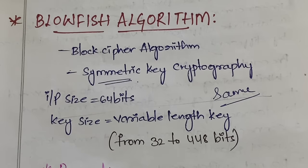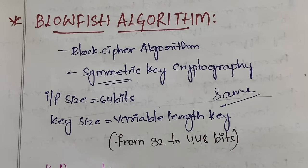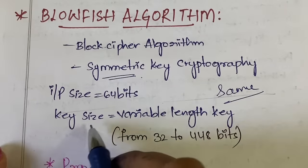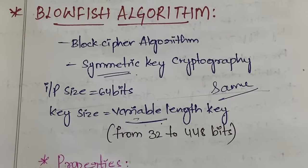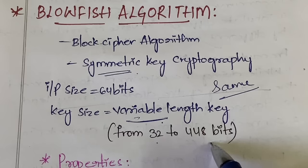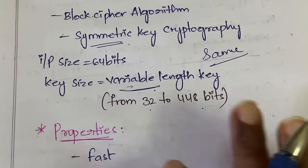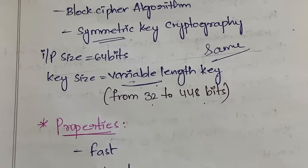The size of the input in this case is 64 bits. For each algorithm you need to know the size of the input and the size of the key. For DES the input was 64 bits; for AES it was 128 bits. In Blowfish the key length is variable — you can change it from 32 to 448 bits as per your requirement, which is why it is very secure. The key must be a multiple of 32 bits.